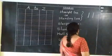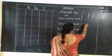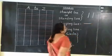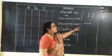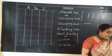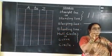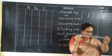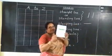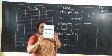And the next one is sleeping line. This is a sleeping line. What is this? Sleeping line. What is this? Sleeping line. This is sleeping line. See here everybody — this is sleeping line.